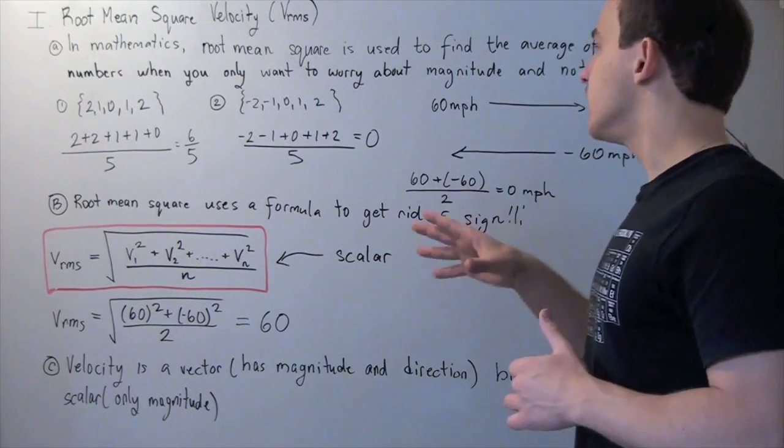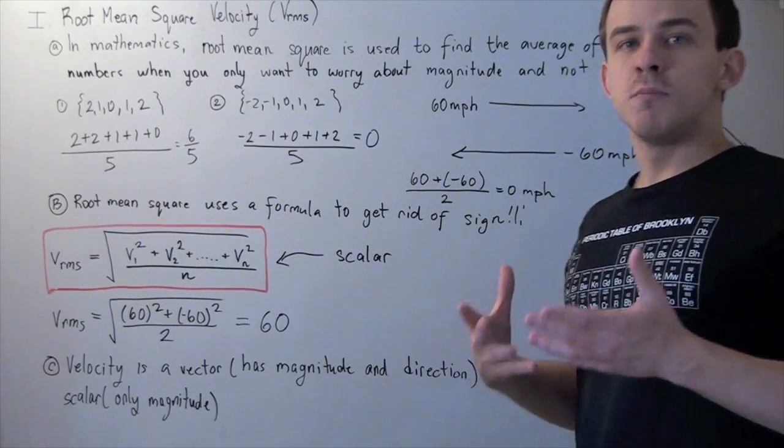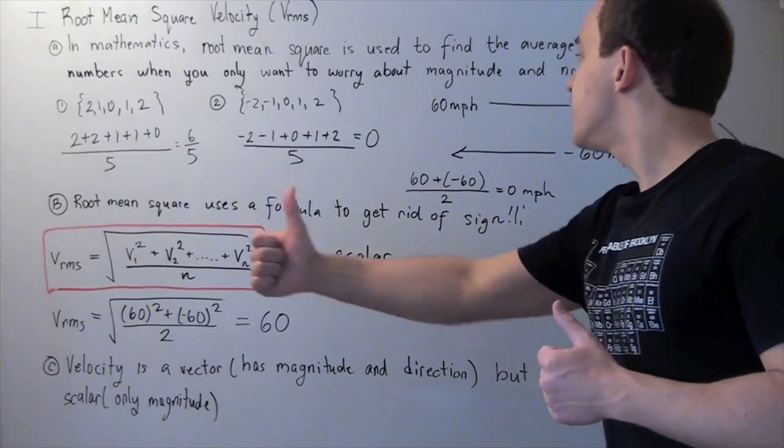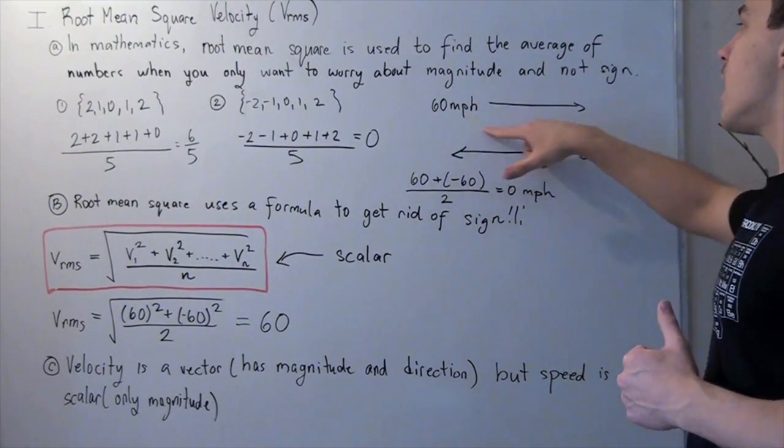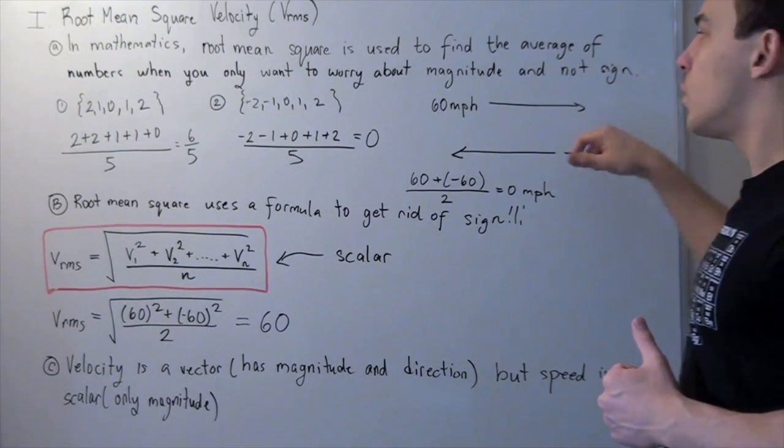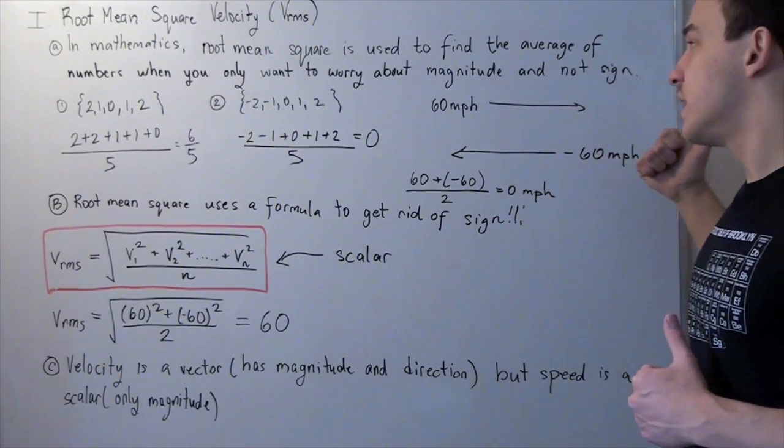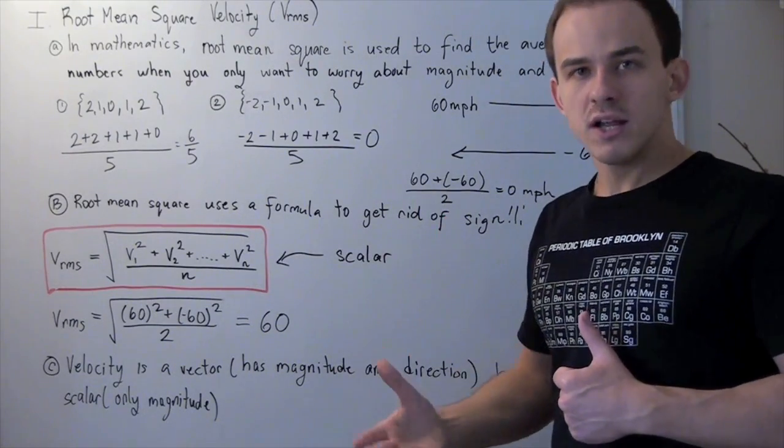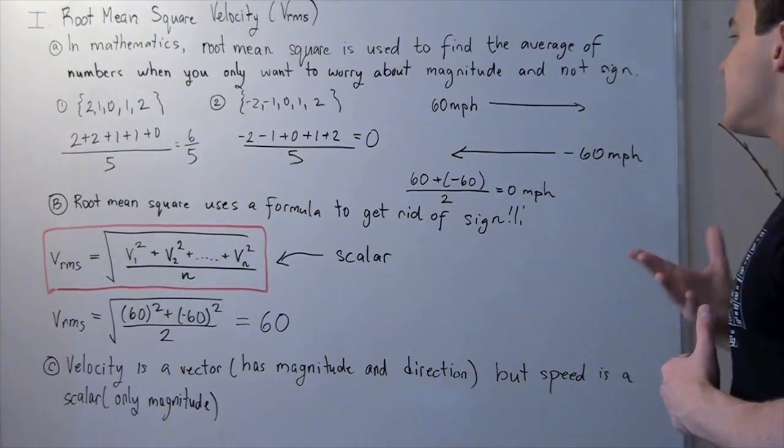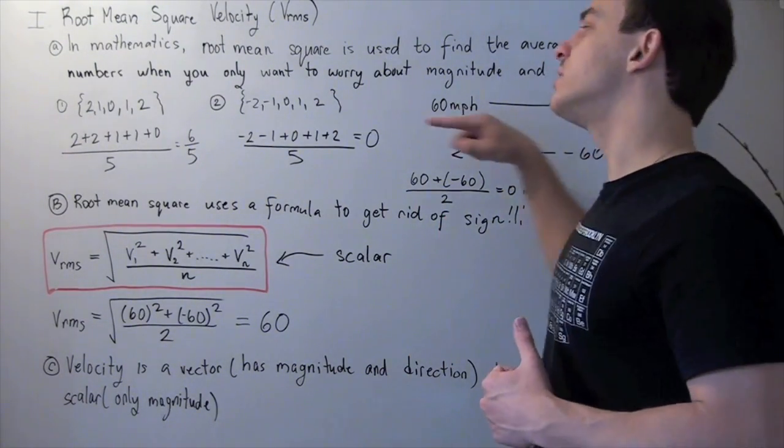Now from a physics perspective, let's look at moving cars. Suppose a car is traveling in this direction at 60 miles per hour. And suppose in this direction is a positive direction. Now suppose another car is also traveling 60 miles per hour, but in the other direction.